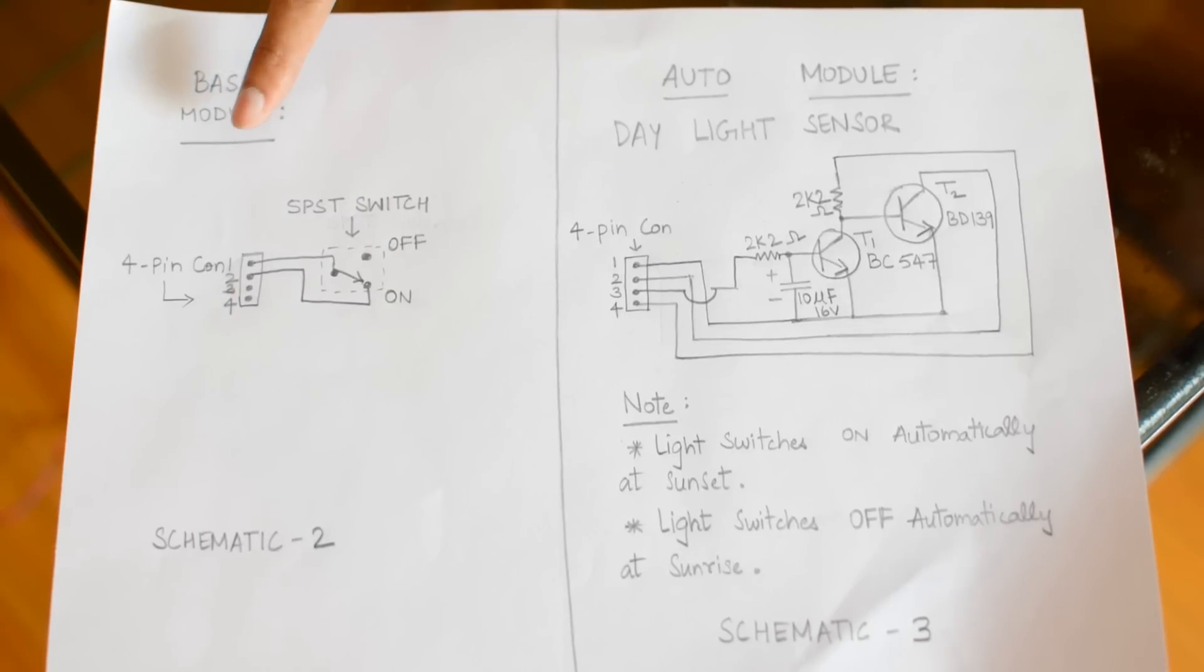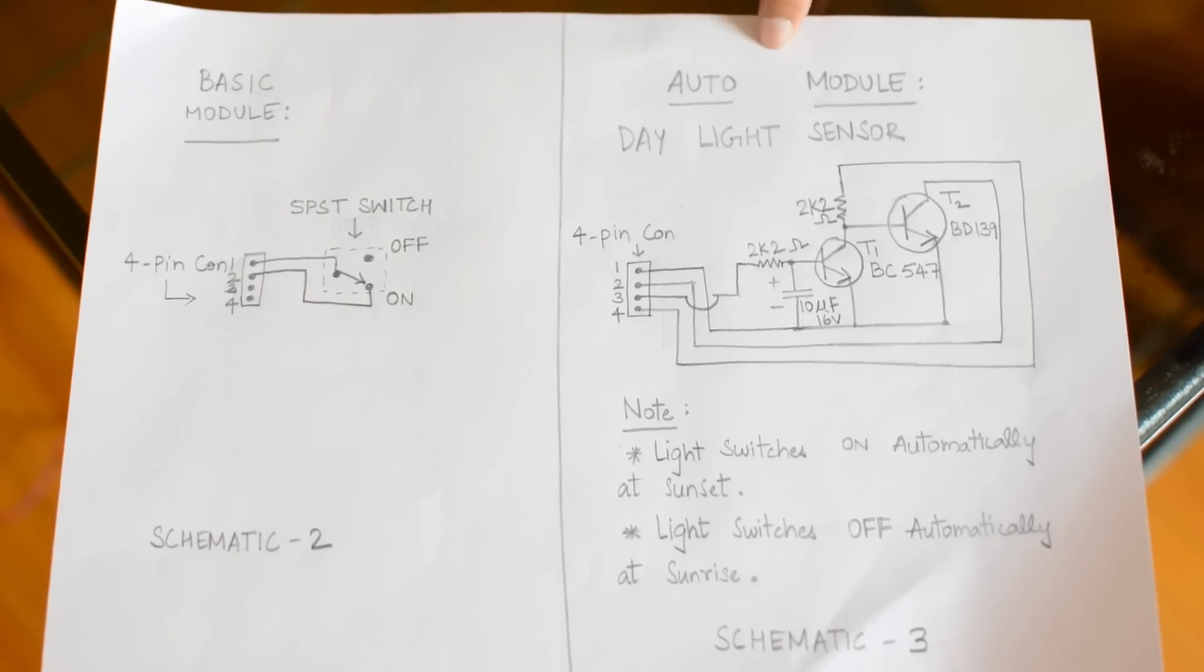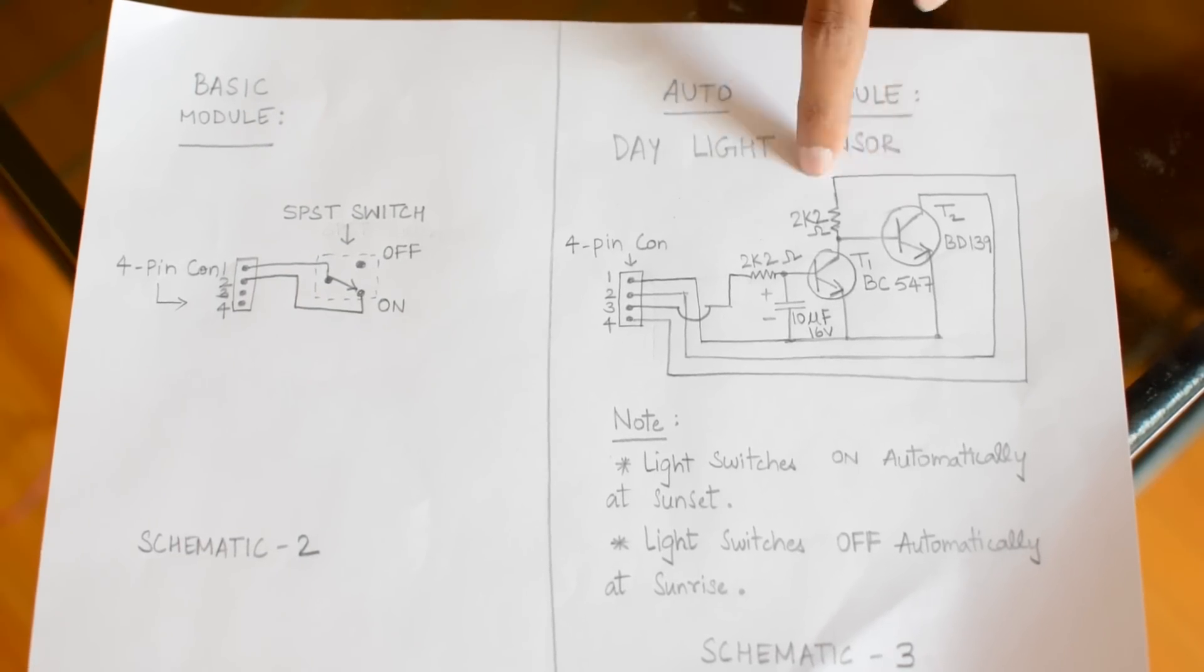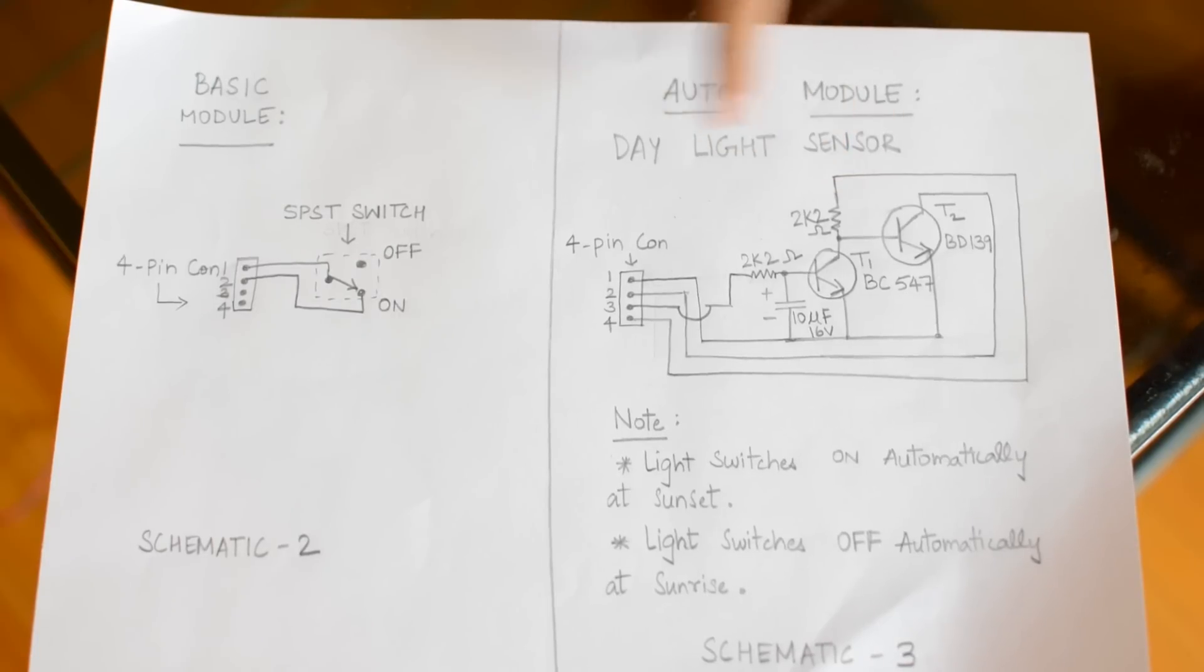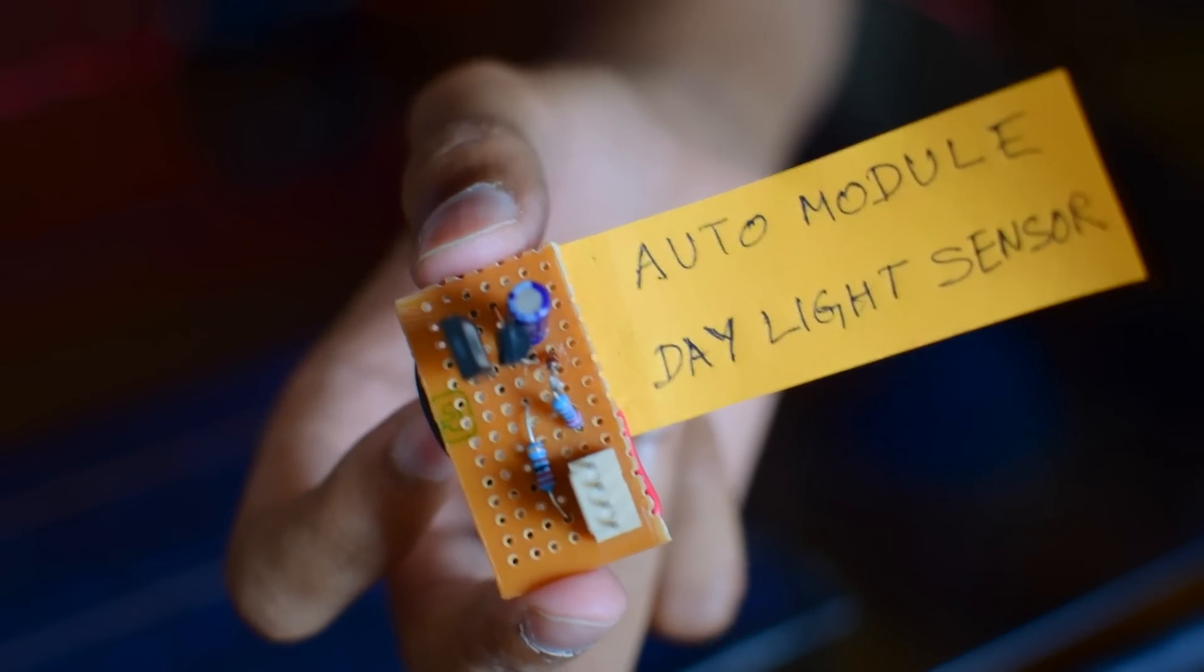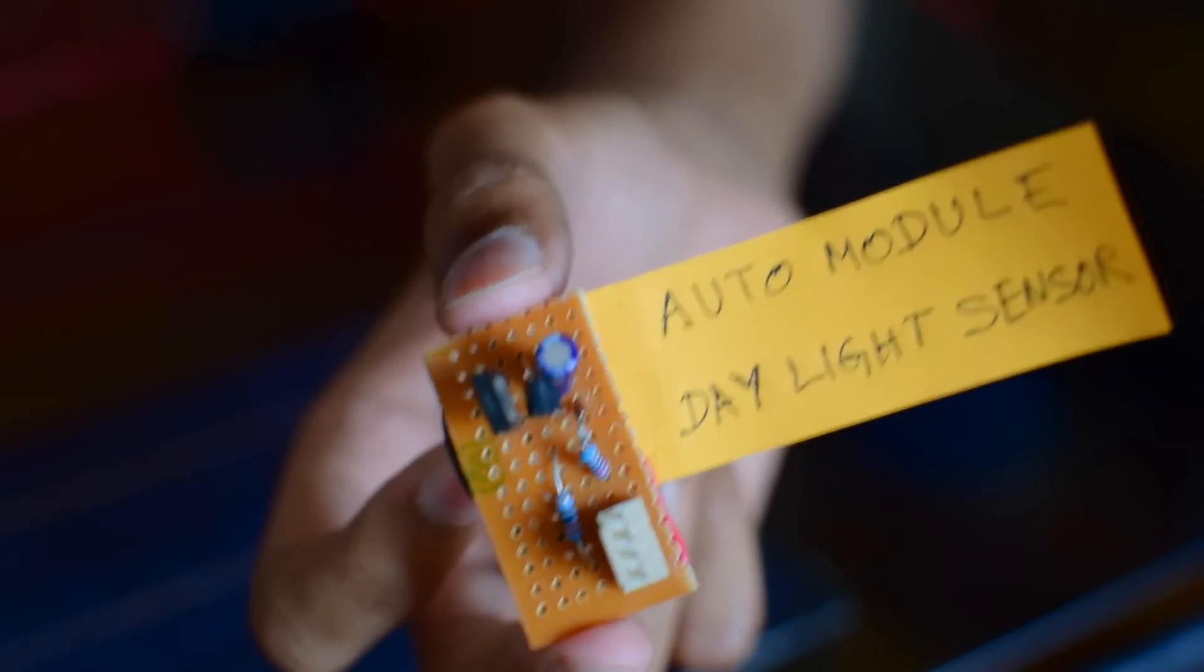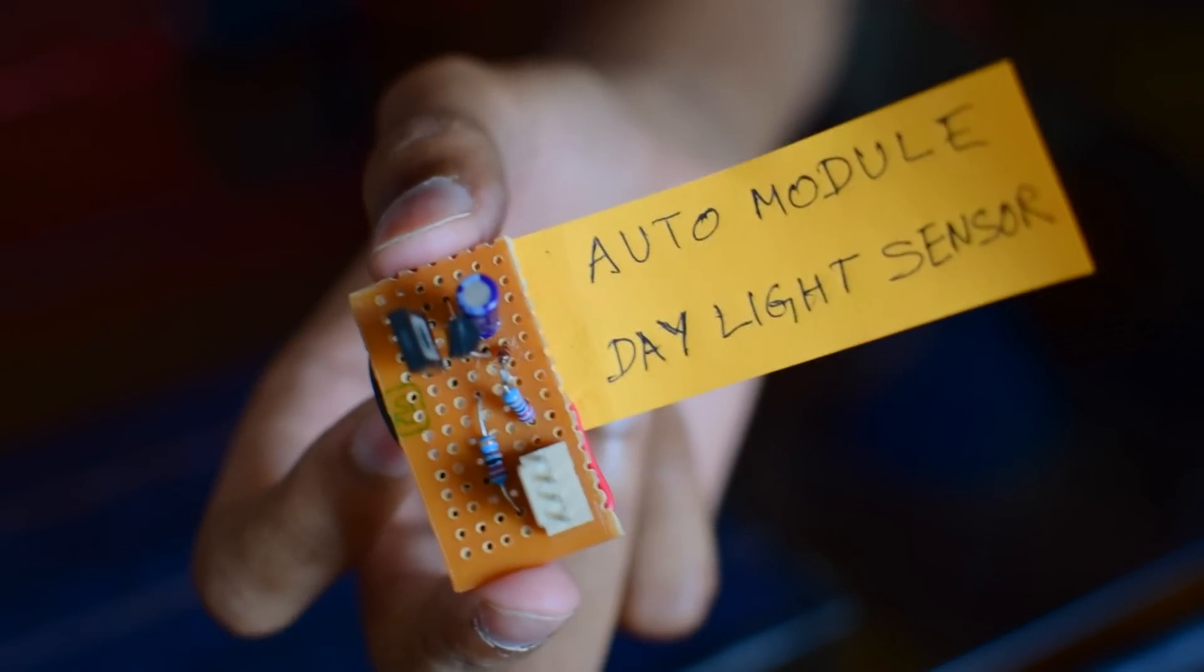This is the simplest one and this is the auto module which senses the daylight. I have used 2 common emitter stages to sense the daylight and this is the 4-pin connector. This is the daylight automatic sensing module. It is very simple. I have shown everything in the schematic.